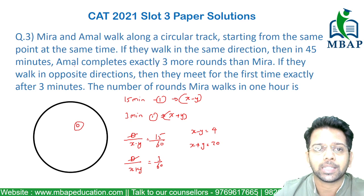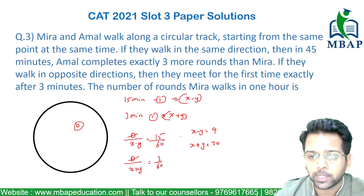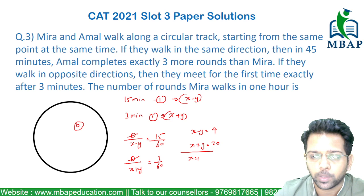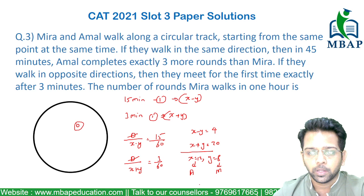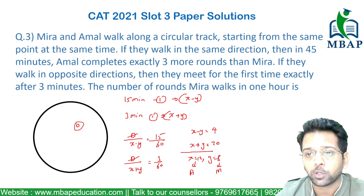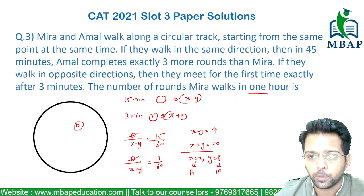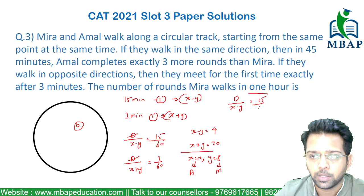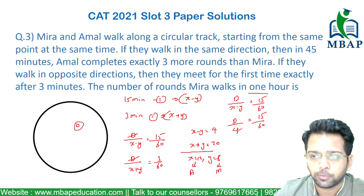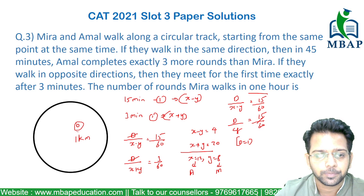Now, who is faster? Since Amal completes 3 more rounds than Meera, Amal is x and Meera is y. Solving x minus y equals 4 and x plus y equals 20, we get x equals 12 and y equals 8. So Amal's speed is 12 kmph and Meera's speed is 8 kmph. The difference is 12 minus 8 equals 4. Using d divided by (x minus y) equals 15/60 with x minus y equals 4, we get d equals 1 kilometer — the circumference is exactly 1 kilometer.